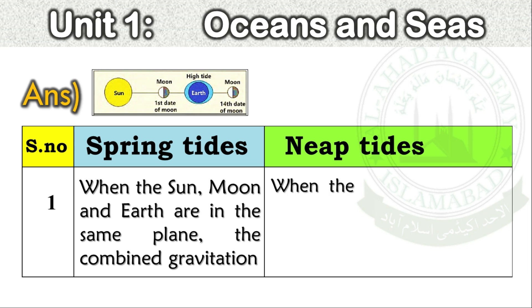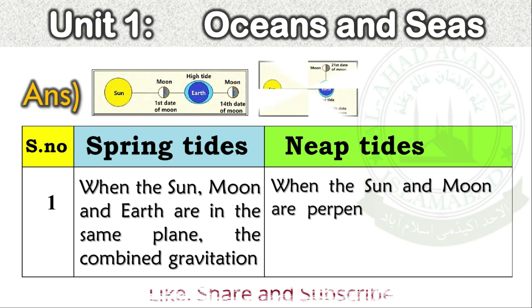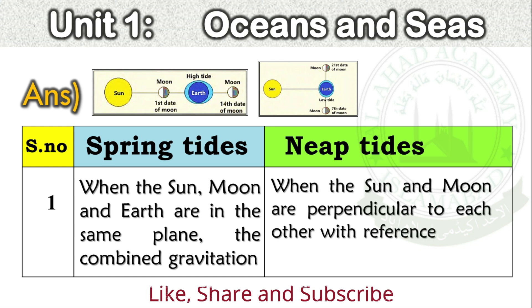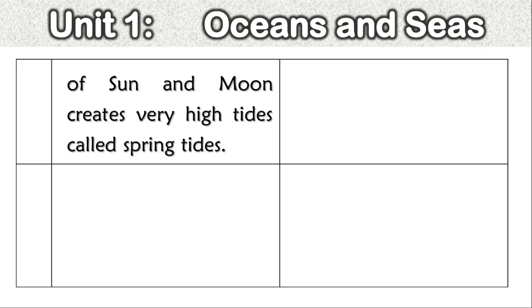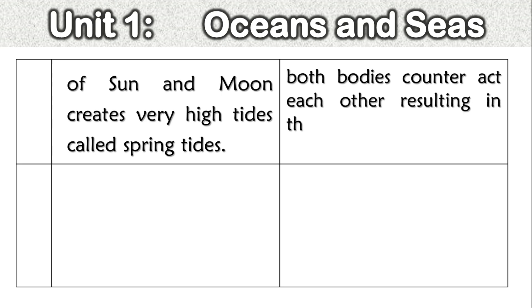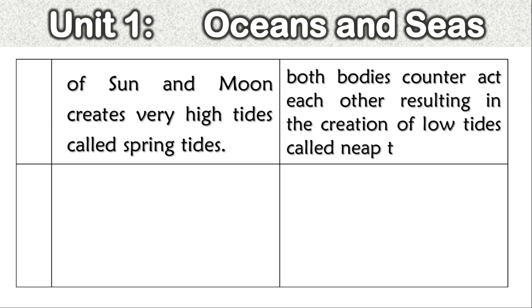Neap tides: When the sun and moon are perpendicular to each other with reference to the earth, the gravitation of both bodies counteract each other, resulting in the creation of low tides called neap tides.